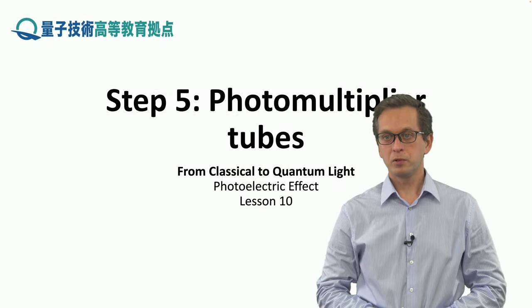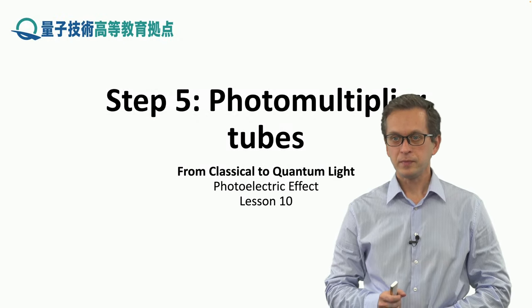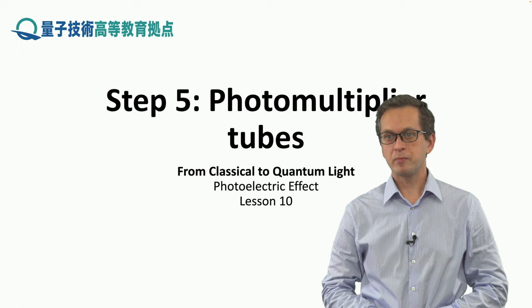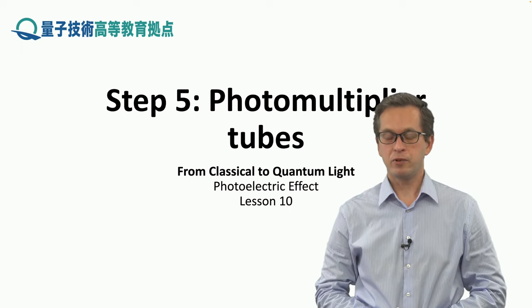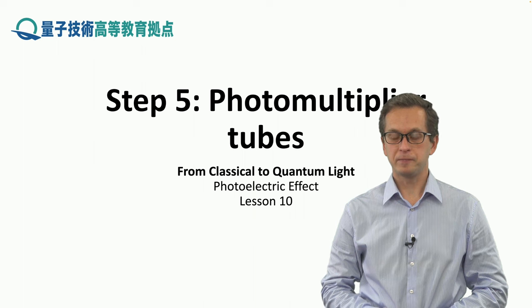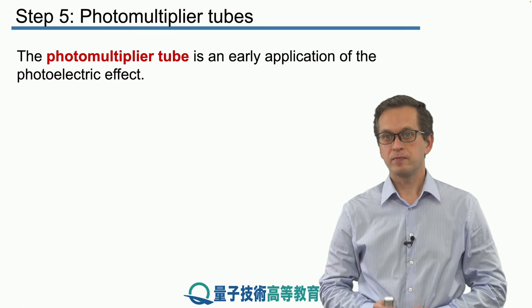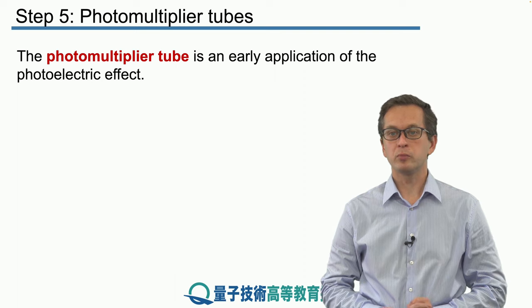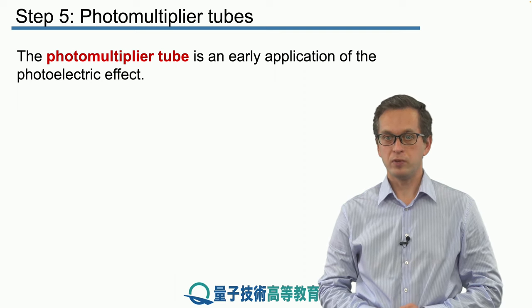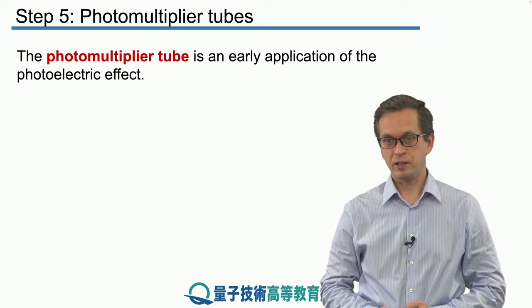Step five: photomultiplier tubes. In this final step of this lesson, we will briefly discuss a very important application of the photoelectric effect. This application or technology is known as the photomultiplier tube, and it's one of the early applications of the photoelectric effect.